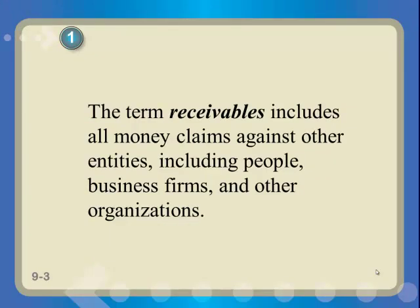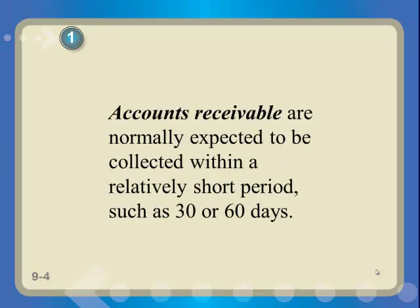Receivables are amounts that people owe us. Accounts receivable is the term we use for a short-term period — money owed to us within 30, 60, 90, maybe 120 days — essentially within a year.